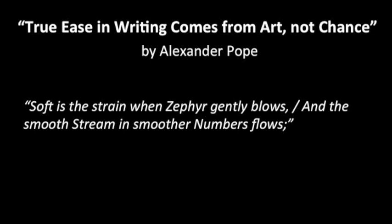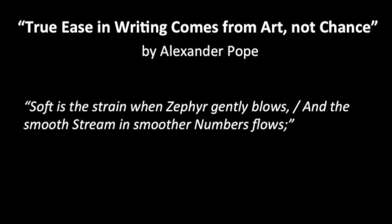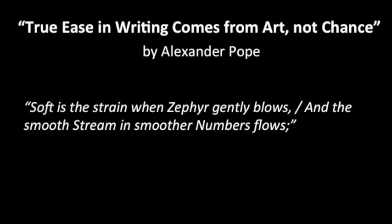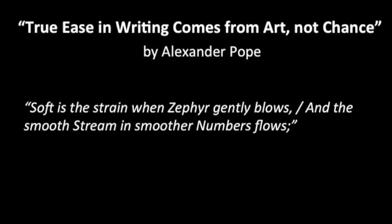An example of euphony is found in lines 5-6: 'Soft is the strain when zephyr gently blows, and the smooth stream in smoother numbers flows.' The pleasing effect of the repeated S sounds in these lines, along with the idea of the gentle blowing of the wind and smooth flowing of the stream, create euphony.